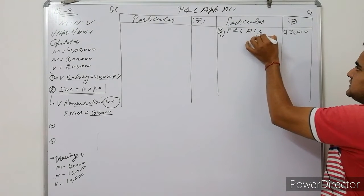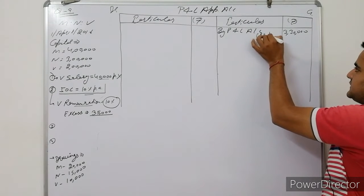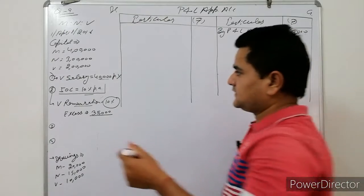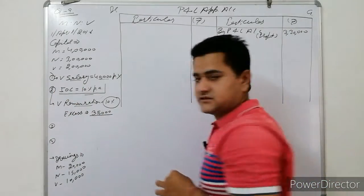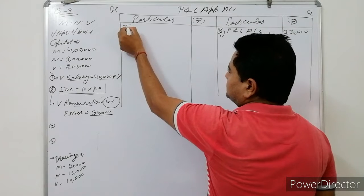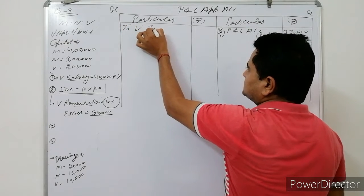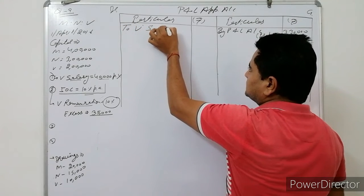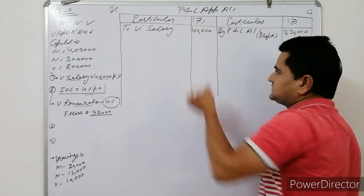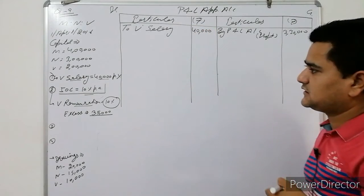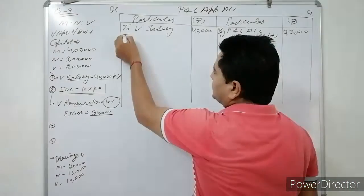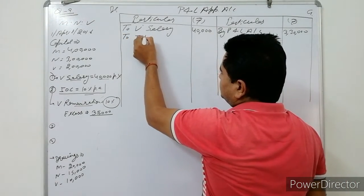Now point-wise: the first point is salary. Salary comes on the debit side of the appropriation account. Salary is Rs.40,000 per annum. Then interest on capital at 10% — we give it to all three partners: Manish, Navan and Weibo.